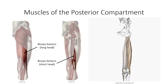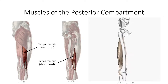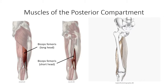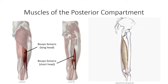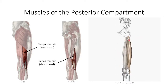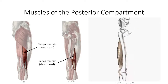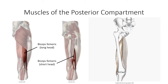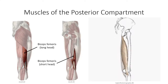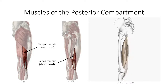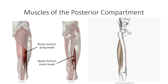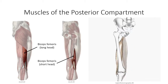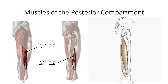The biceps femoris muscle is the lateral muscle in this posterior compartment. As the name implies, it is actually a combination of two separate heads. The long head originates with the semitendinosus and semimembranosus, and thus acts at both the hip and knee joints, whereas the short head acts on the knee joint exclusively. This distinction, as well as the fact that the two heads receive different innervation, mean that the short head is not considered part of the hamstring muscle group. We can feel this insertion of the muscle, but this time as a single tendon, instead of as two distinct tendons as on the medial side.